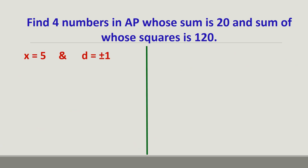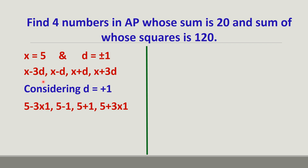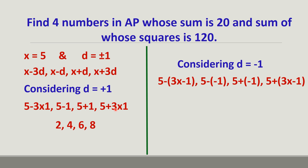We have x = 5 and d = ±1. With d = +1: the numbers are 5 − 3(1) = 2, 5 − 1 = 4, 5 + 1 = 6, 5 + 3(1) = 8. With d = −1: the numbers are 5 − 3(−1) = 8, 5 − (−1) = 6, 5 + (−1) = 4, 5 + 3(−1) = 2 — the same numbers in reverse order.